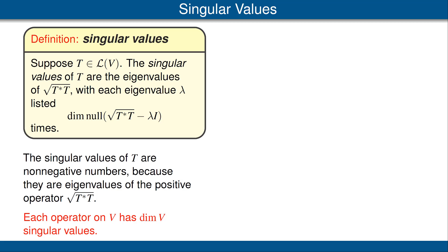Let's also note that each operator on V has as many singular values as the dimension of V. There are many ways to see this. For example, from the spectral theorem applied to the square root of T*T, we can easily see that the sum of the dimensions of the null spaces of the square root of T*T minus lambda times the identity equals the dimension of V, as we take the sum over all the eigenvalues.